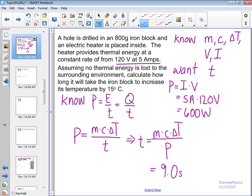And c for iron - it's in the table on the previous page, if you're looking for it, it's right there. It's 4.48 times 10 to the second joules per kilogram per Celsius.